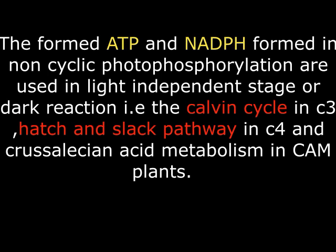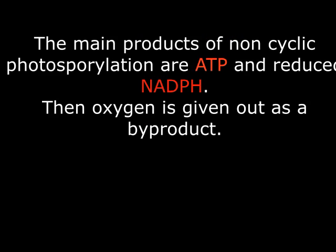Those two components — ATP and reduced NADP — are very vital because we apply them in the dark reactions like the Calvin cycle as well as the Hatch and Slack cycle. The Calvin cycle operates in C3 plants, the Hatch and Slack pathway in C4 plants, and CAM plants also apply some of the ATP and NADPH from non-cyclic photophosphorylation. Simply put, non-cyclic photophosphorylation is the formation of ATP from ADP and inorganic phosphate in the presence of light.